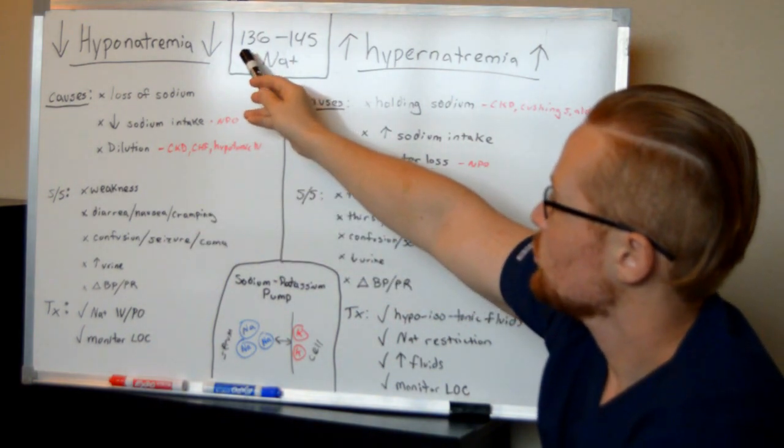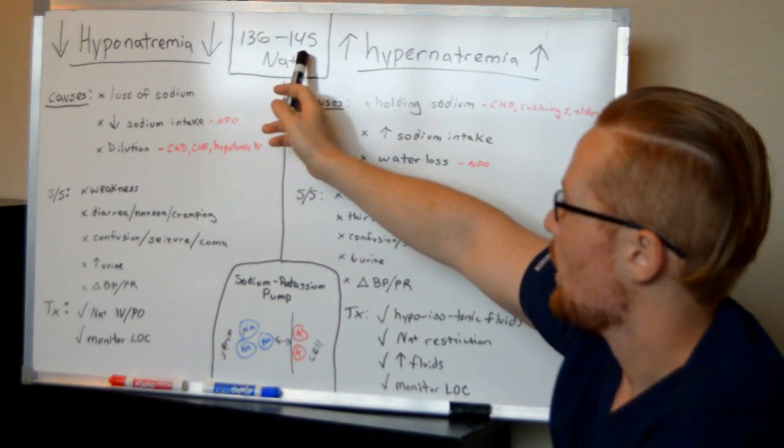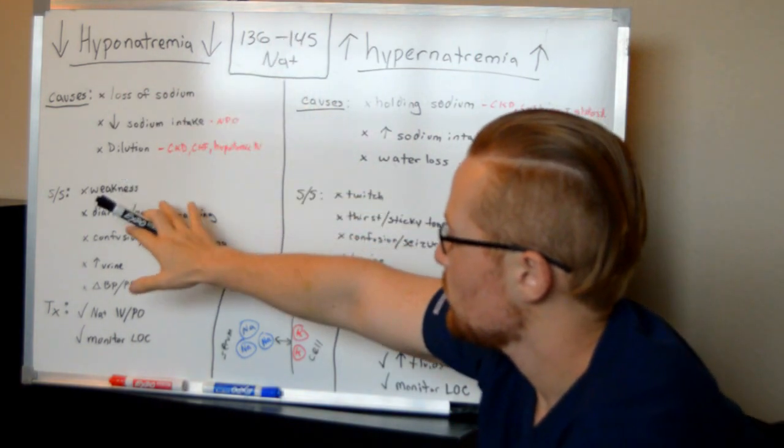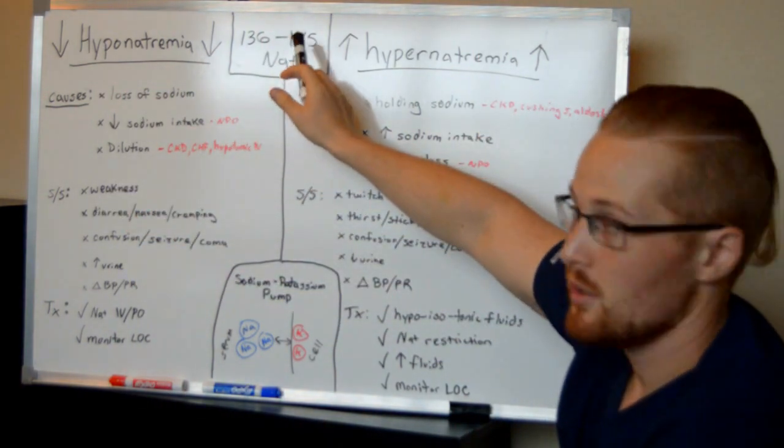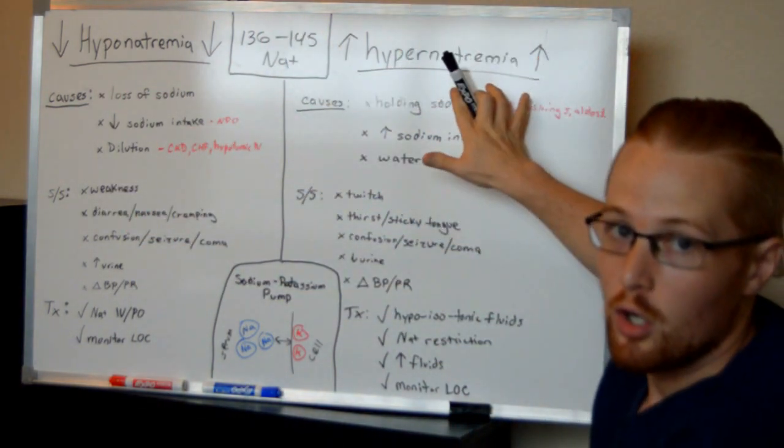To start, the salt level should be between 136 and 145. So anything lower than 136 will be on the hyponatremic side. Anything greater than 145 will be on the hypernatremic side, too much salt.